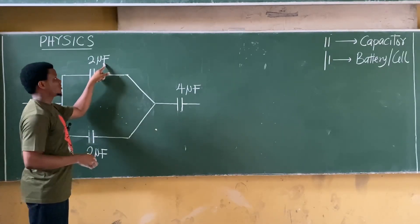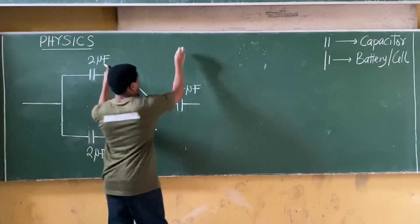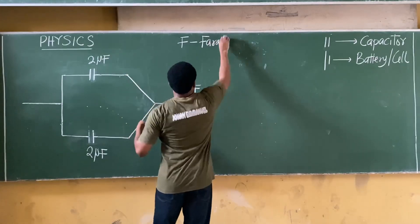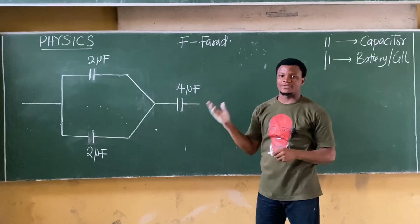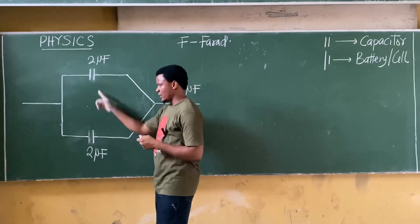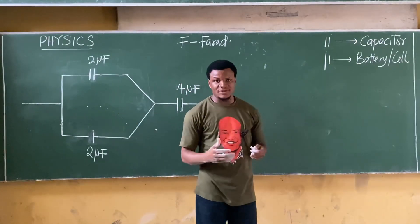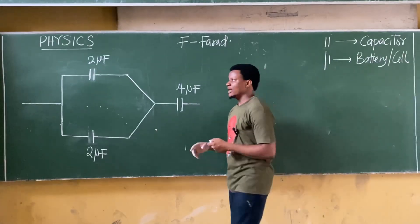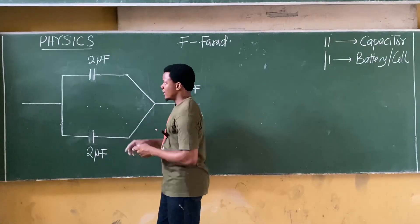You can also identify a capacitor by its unit — capacitance is measured in farads (F). Now, to find the equivalent capacitance of this connection, the first thing to notice is that two of these capacitors are connected in parallel. We'll be using a circuit reduction technique, resolving the circuit step by step.